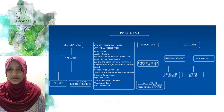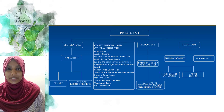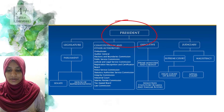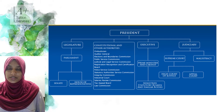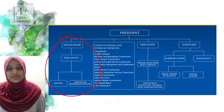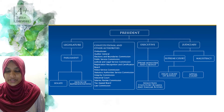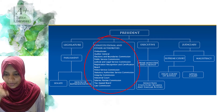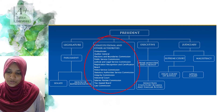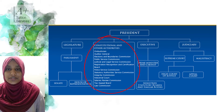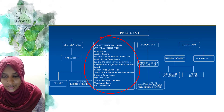If you look on your screen you'll see an organizational diagram which breaks down the government and all its components. At the very top we have the president, who is head of state and in command of the legislative branch, the executive branch, and the judiciary. Under the legislative branch we have parliament, and under parliament we have the senate and the house of representatives. Constitutional and other authorities falling under the jurisdiction of the president include the ombudsman, auditor general, elections and boundaries commission, judicial and legal service commission, registration recognition and certificate board, police service commission, statutory authority service commission, integrity commission, industrial court, salaries review commission, tax appeal board, and the law commission.